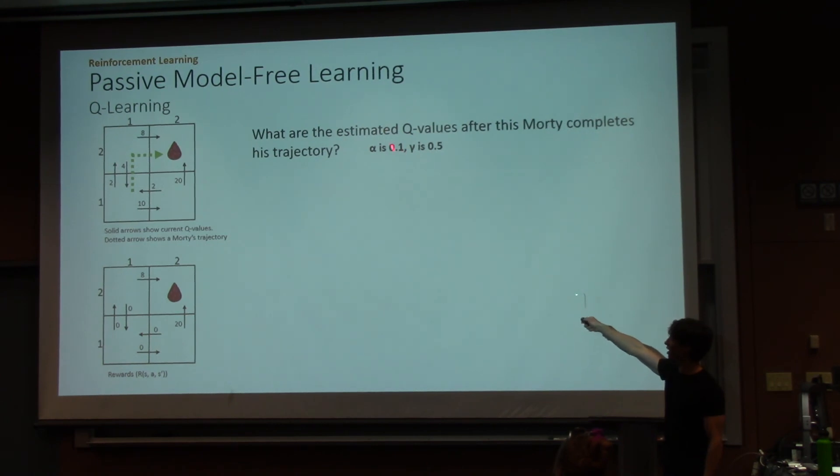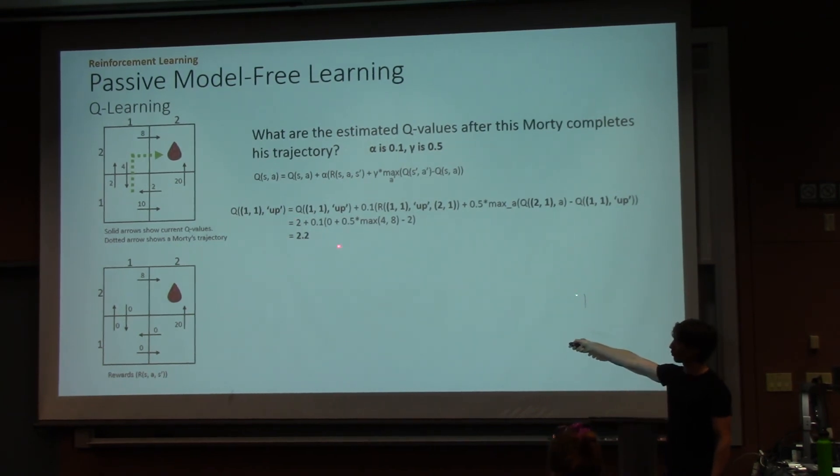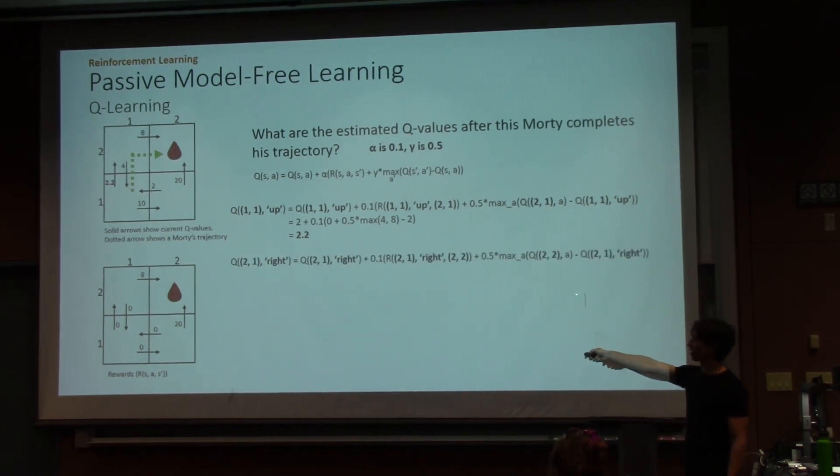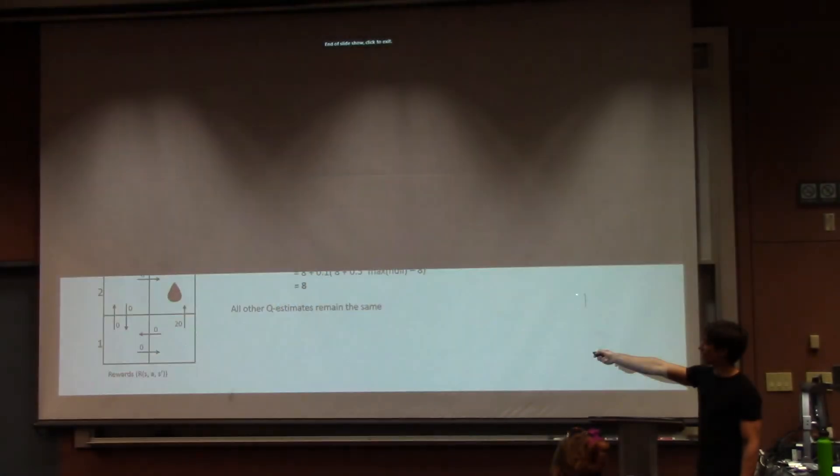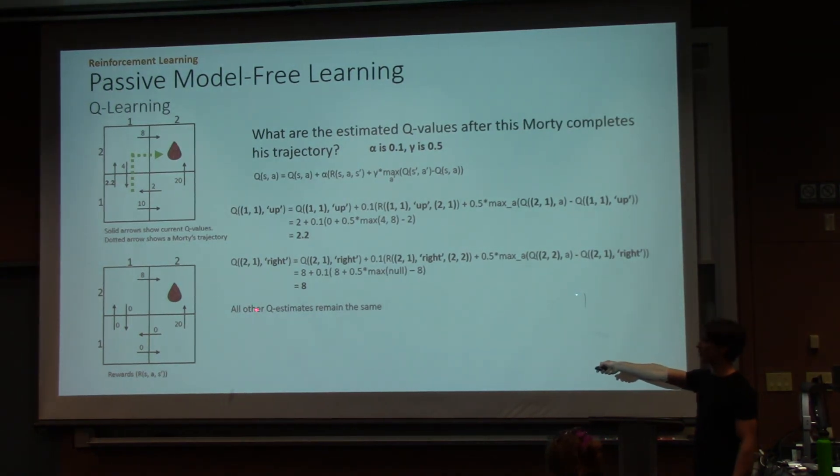With an alpha of 0.1, so a small step size. And a gamma value of 0.5, which is our discount factor. Again, this is just plug and chug. I'm sure you guys want to get out of here. So we'll step through. We'll see that when we have 1, 1 up, we get the value of 2.2. So that value gets updated. Again, from state 2, 1 and taking the action right. Plug the numbers in. And that value gets updated. It ends up being the same. And because we only saw these states and actions, those are the only state action values that will end up getting updated.